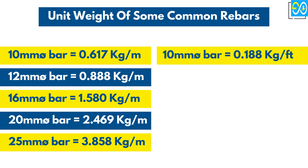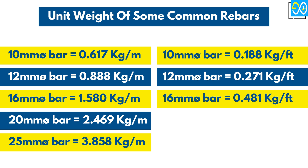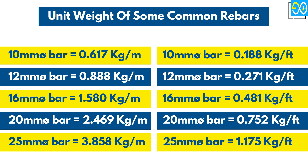10 millimeters diameter bar equals 0.188 kilogram per feet. 12 millimeters diameter bar equals 0.271 kilogram per feet. 16 millimeters diameter bar equals 0.481 kg per ft. 20 mm diameter bar equals 0.752 kg per ft. 25 mm diameter bar equals 1.175 kg per ft.